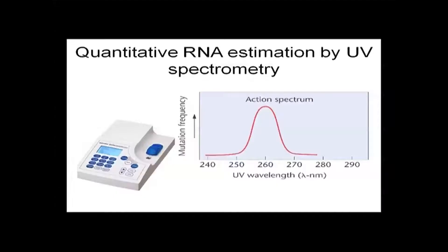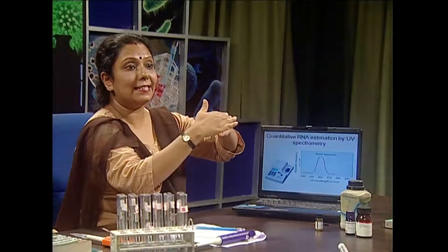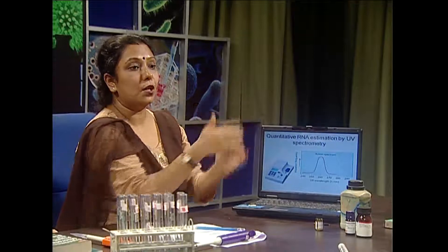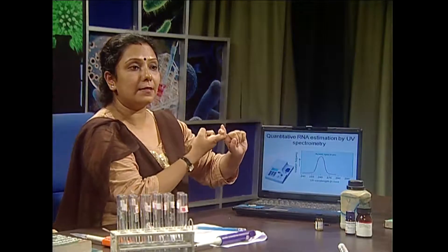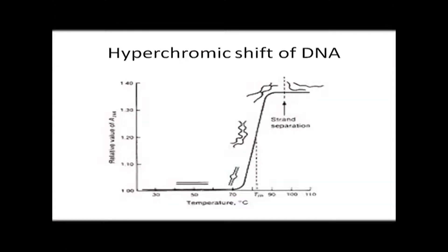RNA has lambda max at around 254 nanometers, but at 260 nanometers it also has absorption. Interestingly, in case of DNA, the bases are stacked inside as it is double-stranded. But in case of RNA, as it is single-stranded, the bases are opened and exposed, so it can absorb much more light at OD 260 nanometers than DNA. When DNA is converted from double-stranded to single-stranded, a huge increase of absorption occurs — that is called hyperchromic shift.